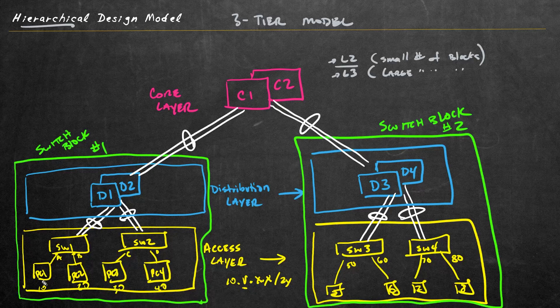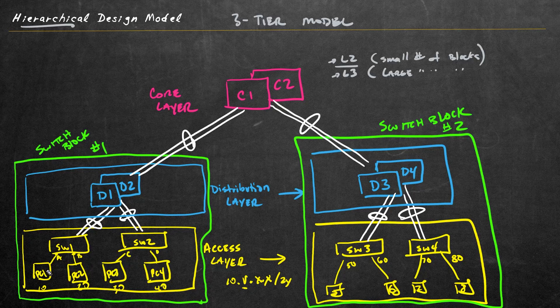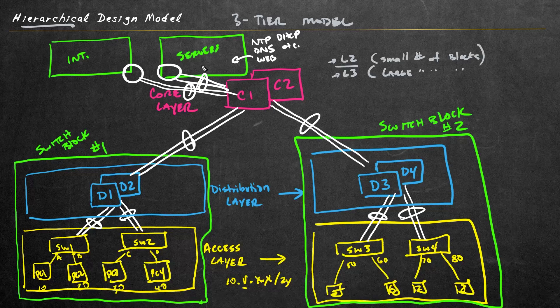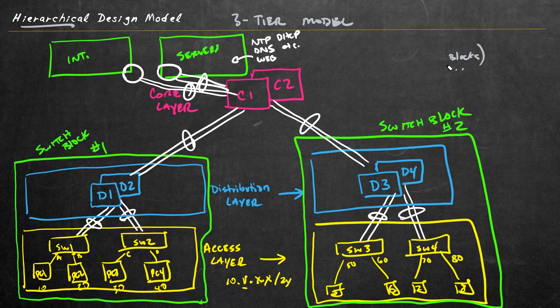What if PC1 needs to go out to the internet, or needs to reach a company server? We create logical blocks for those as well. We put some kind of routing device on each — a multilayer switch or typical router — with fault-tolerant connectivity to the core. Any client needing internet access goes through the core. Company servers can host NTP, DNS, web services, DHCP, etc. No matter how many switch blocks we add, there are the same number of hops between a switch block and those shared resources. This represents a complete three-tier hierarchical model with access layer, distribution layer, and core.